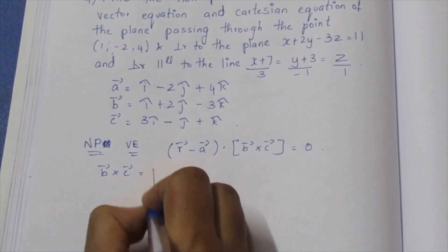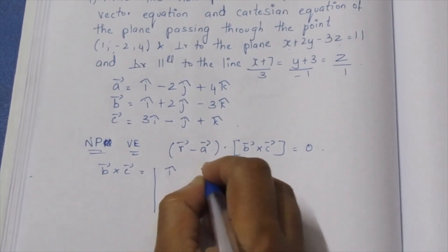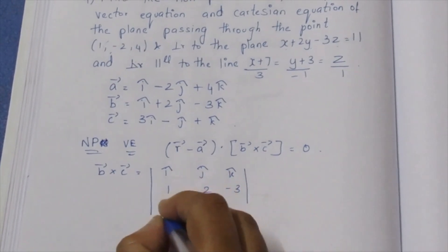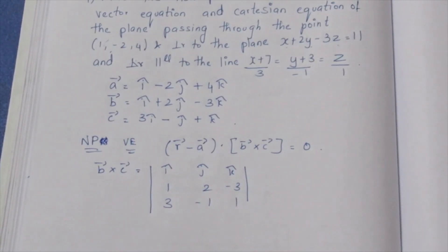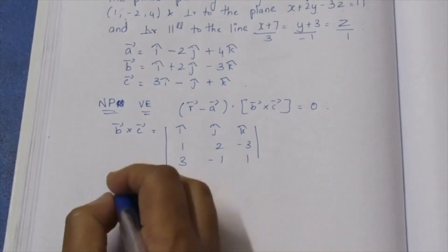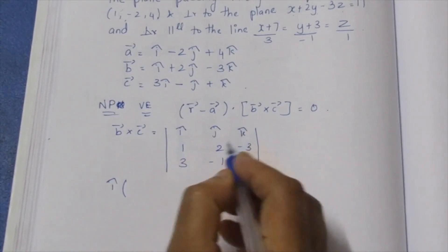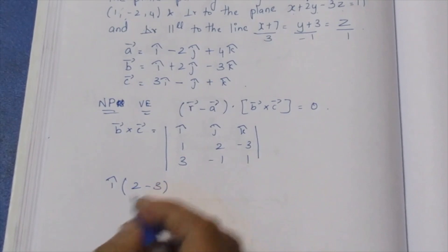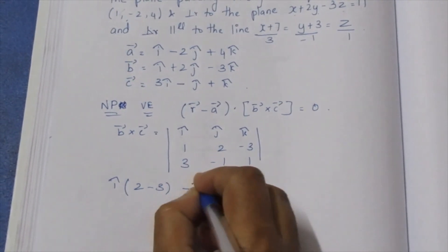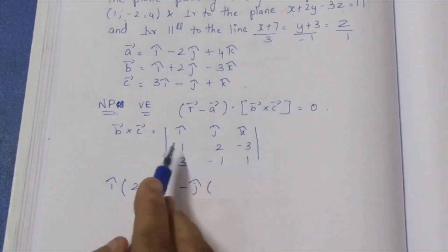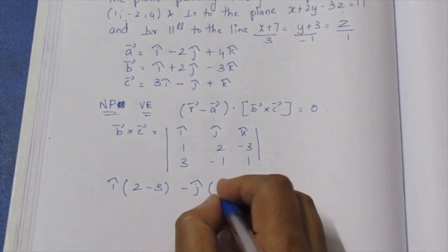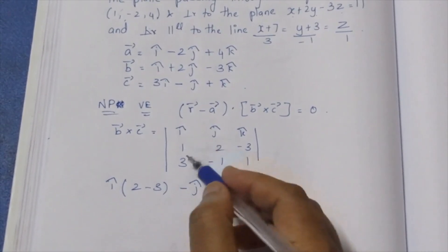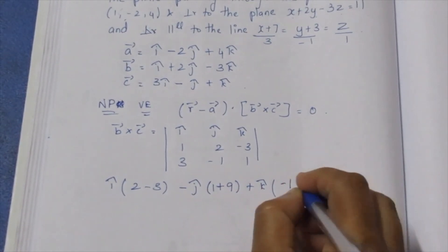Computing b-vector cross c-vector as a determinant: i-cap, j-cap, k-cap with rows (1, 2, -3) and (3, -1, 1). Expanding: i-cap times (2×1 minus (-3)×(-1)) minus j-cap times (1×1 minus (-3)×3) plus k-cap times (1×(-1) minus 2×3), giving us i-cap minus 2j-cap... minus 1, minus 6.